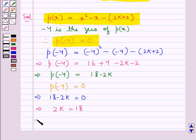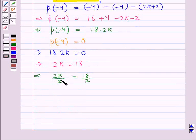To get the value of k, we divide both sides by 2. So 2k/2 = 18/2, which gives us k = 9.